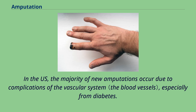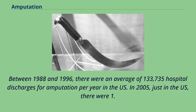In the US, the majority of new amputations occur due to complications of the vascular system, especially from diabetes. Between 1988 and 1996, there were an average of 133,735 hospital discharges for amputation per year in the US.